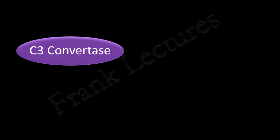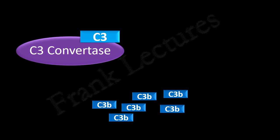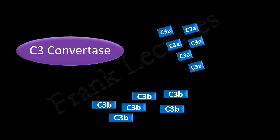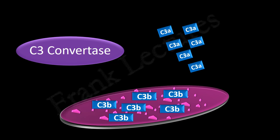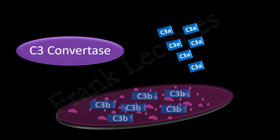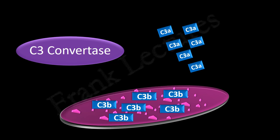This C3 convertase further cleaves more C3 proteins into C3b and C3a. The C3b molecules bind to the microbial surface, and C3a molecules are released. The binding of C3b molecules to the microbial surface results in the coating of the microbial surface with C3b molecules. Cleavage of C3 is the critical step in complement activation, and it leads to the terminal steps of the complement pathways.